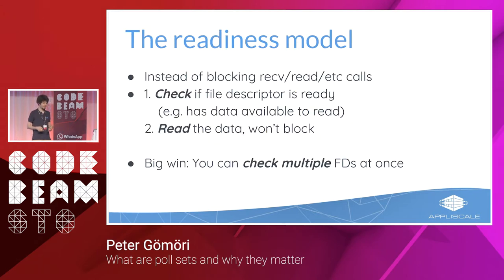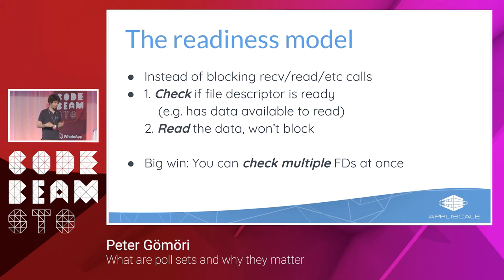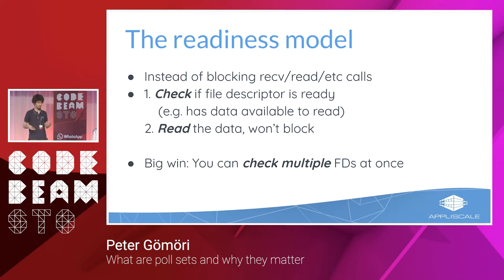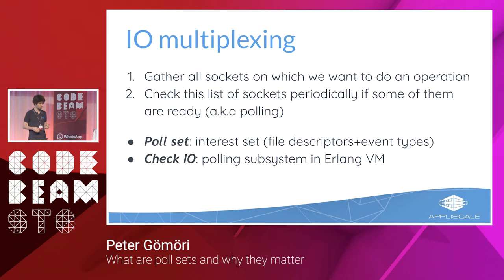So what can we do instead? There's the readiness model. Instead of calling a blocking receive, we do it in two steps: first, check and wait for the file descriptor to be ready for that operation — for example, ready to have data available — then read the data, which is then guaranteed not to block. The good thing is that the operating system supports checking multiple file descriptors at once in a single call, without needing multiple threads. This is how you can multiplex IO.